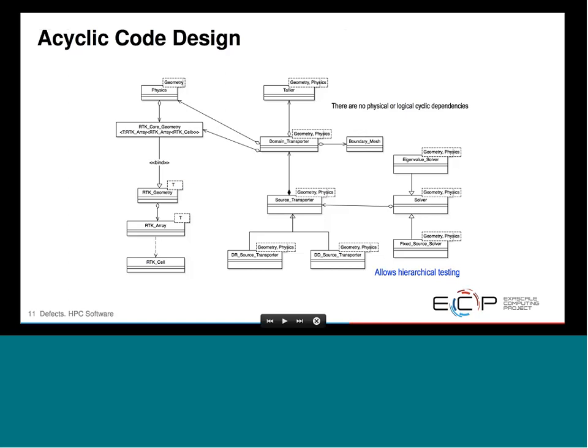For example, there's no two-way association between domain transporter and physics. Domain transporter only depends on physics; physics does not also depend on domain transporter. Besides making your build system easier, this really allows hierarchical testing — a key component of unit testing. When you have lots of two-way dependencies, it becomes very hard to isolate individual pieces and test them.